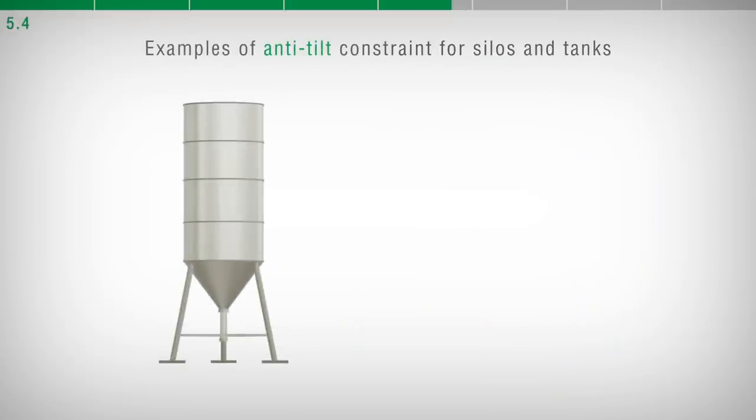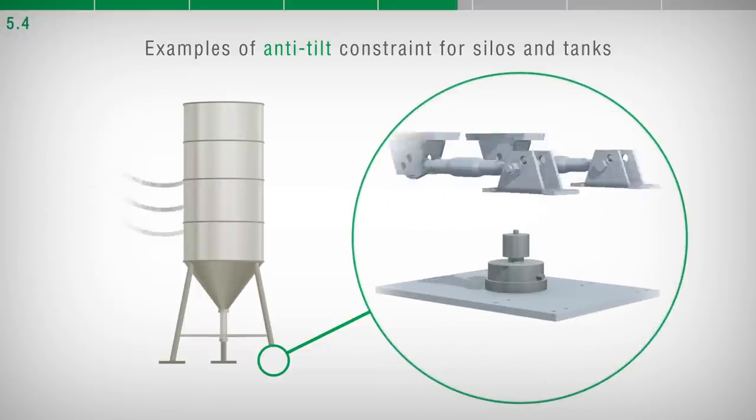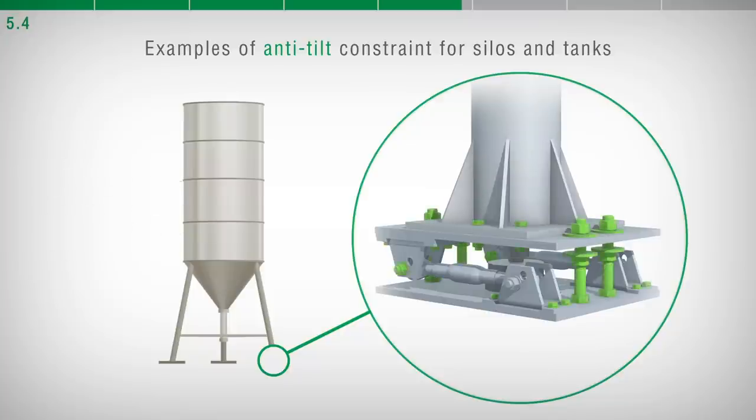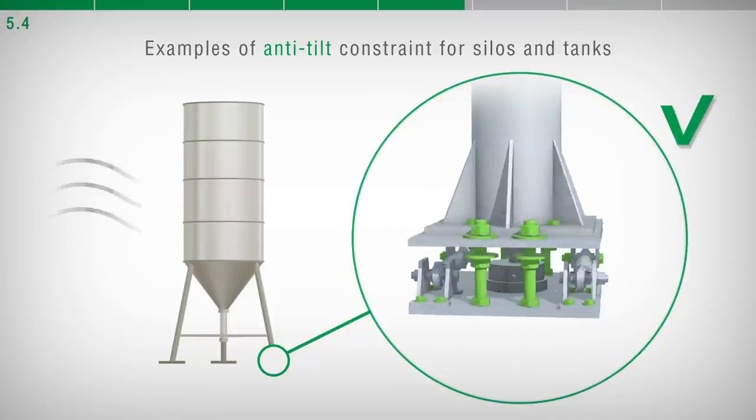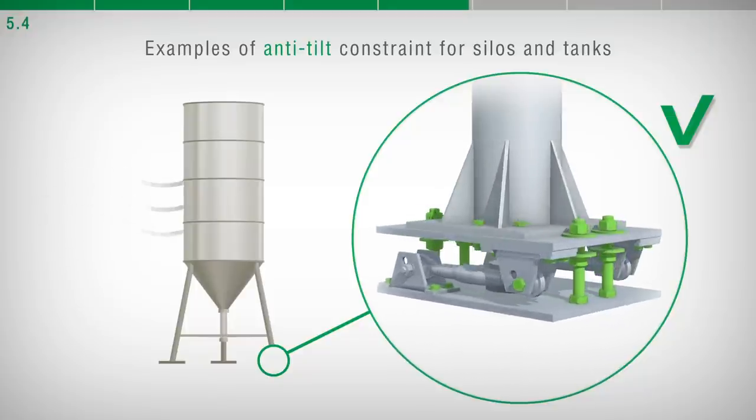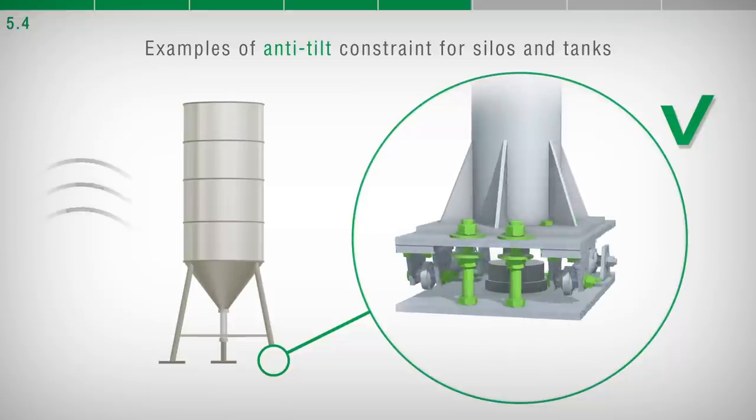The realization of anti-tilt constraint is appropriate in weighing systems such as silos, tanks, or structures placed outdoors and potentially subjected to wind pressure, earthquakes, accidental impacts with operating vehicles such as trucks, forklifts, and other similar situations.